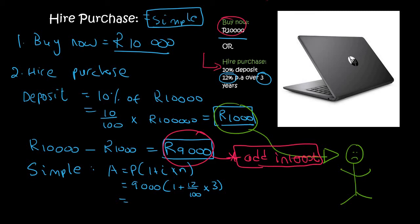Wow. 12,240 Rand. So imagine this, guys. You've already paid 1,000 Rand. Then the man takes that 9,000 Rand that you still owe him and he says, hey, by the way, I'm turning that 9,000 Rand into 12,240 Rand. Crazy, right?